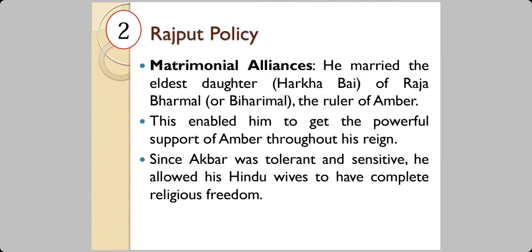The second policy is the matrimonial alliance. He married the eldest daughter of Raja Barmal. This Raja Barmal, also known as Biharimal, was a ruler of Ambar in Rajasthan. He had a daughter known as Harkabhai. Akbar came into matrimonial alliance with him and Raja Barmal became his samandhi.